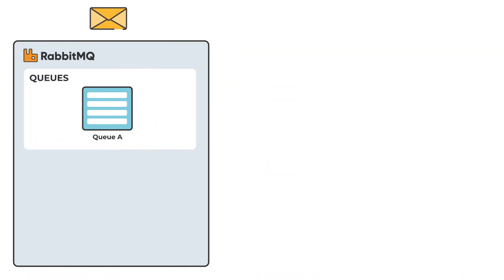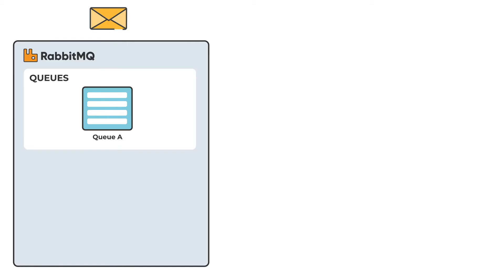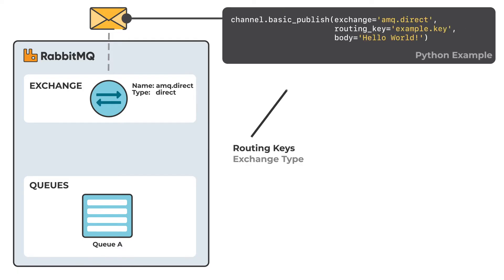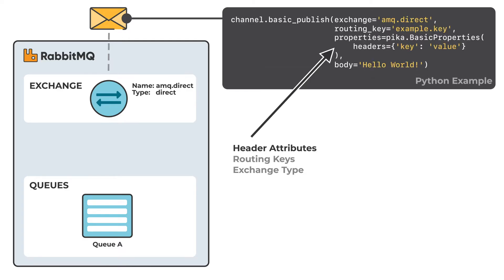The first thing to understand is that messages are not published directly to a queue. Instead, the producer sends messages through an exchange. You can think of an exchange as a mail delivery person ensuring that the message ends up in the correct queue. How a message is routed depends on several things, including the exchange type, which specifies a number of routing rules, routing keys and header attributes. These all act as addresses for messages.